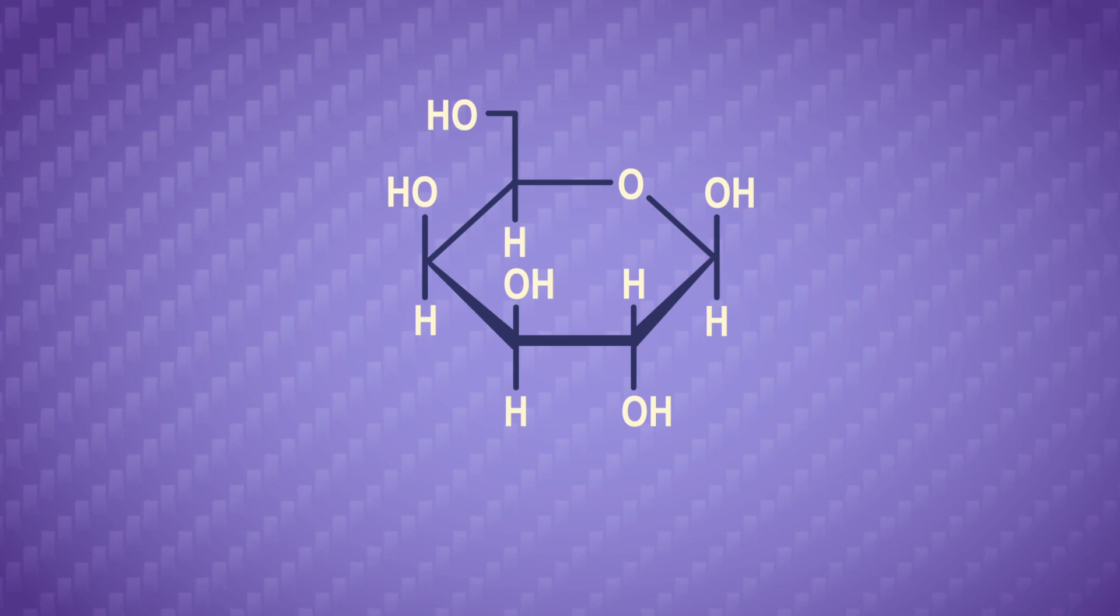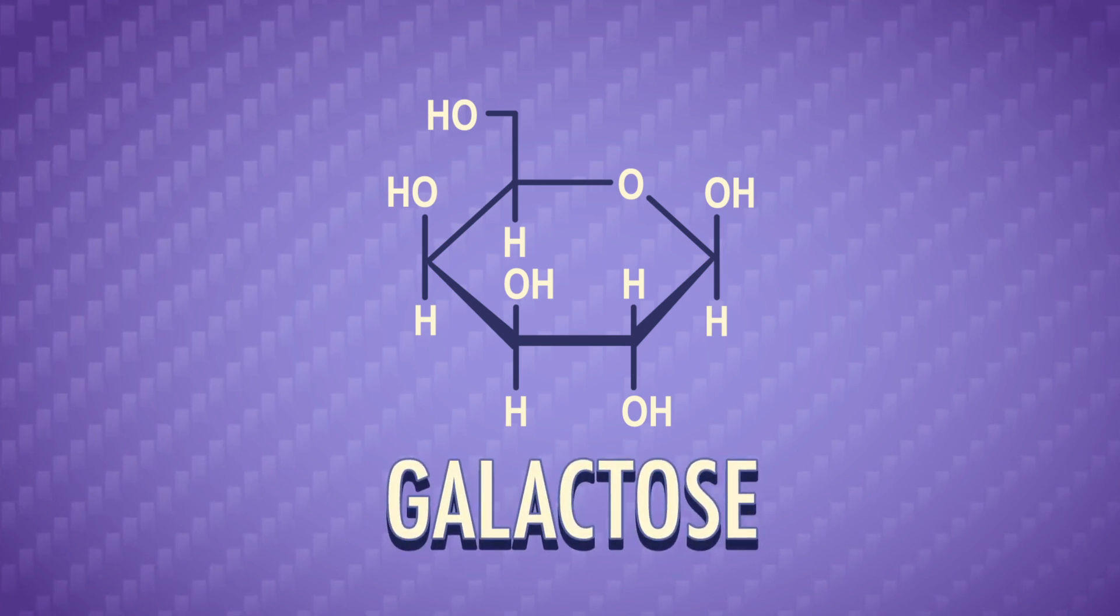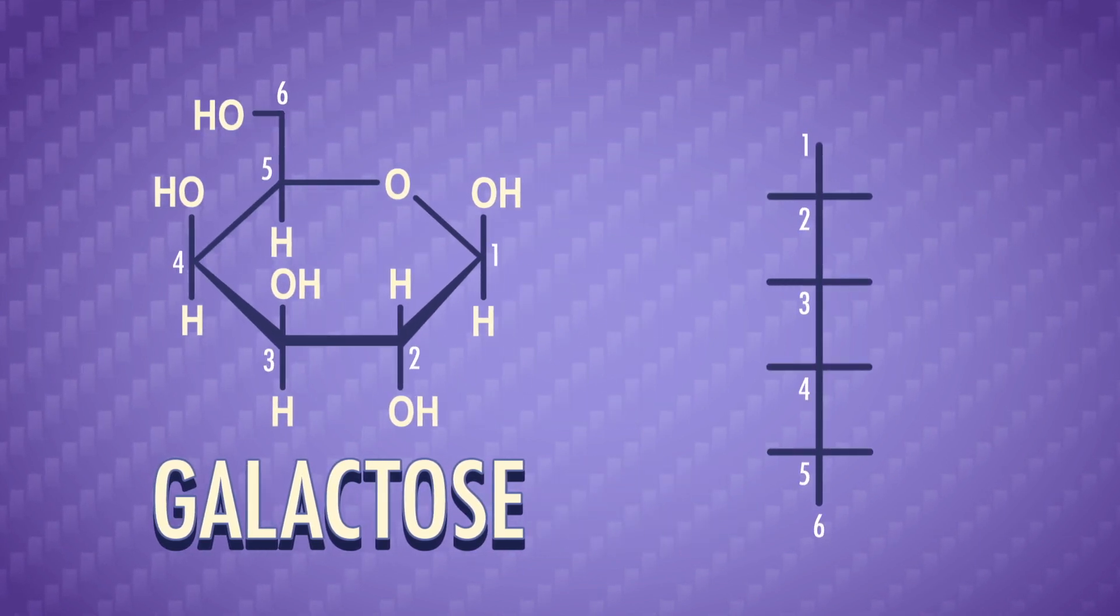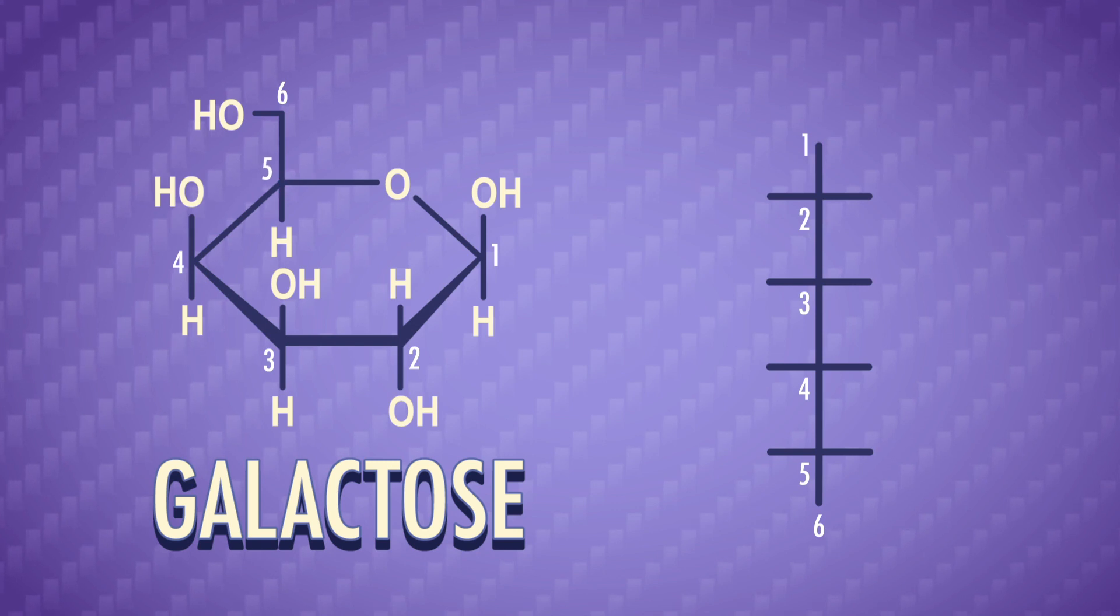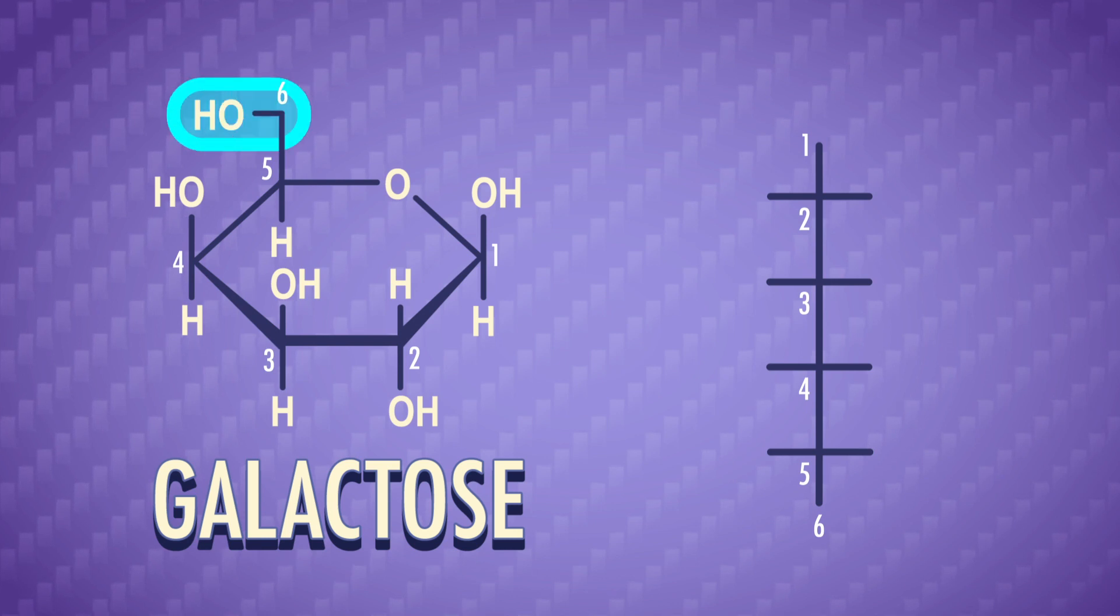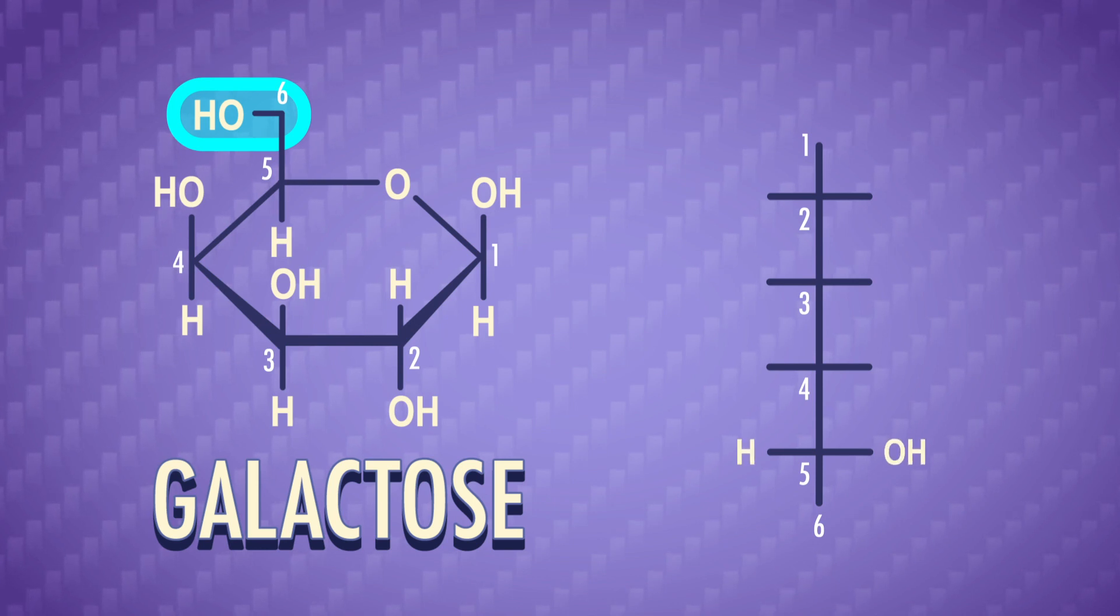By using the Haworth projection of galactose to draw its Fischer projection. Galactose has six carbons, so we can set up a Fischer projection with six carbon atoms. Carbohydrates can be D or L, which is determined by the stereochemistry at the highest numbered chiral carbon. For galactose, this is carbon-5, because carbon-6 has two hydrogens. Since the group attached to the highest numbered chiral carbon, the CH2OH, is pointing up on the Haworth projection, it's a D sugar. On the Fischer projection, we need to put the hydroxyl group on the right side of carbon-5.